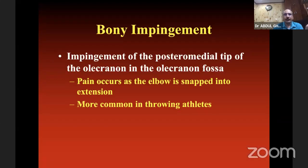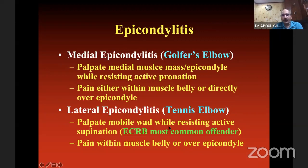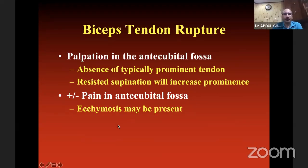Bony impingement: impingement of the posteromedial tip of the olecranon in the olecranon fossa, causing pain as the elbow is snapped into extension — more common in throwing athletes. Epicondylitis can be medial (golfer's elbow) or lateral (tennis elbow). Palpate the medial epicondyle while resisting active pronation for golfer's elbow. In tennis elbow: ECRB is the most common offender; palpate while resisting active supination. Bicep rupture: absence of typical prominent tendon in the antecubital fossa; resistive supination increases prominence and pain; ecchymosis can be present.